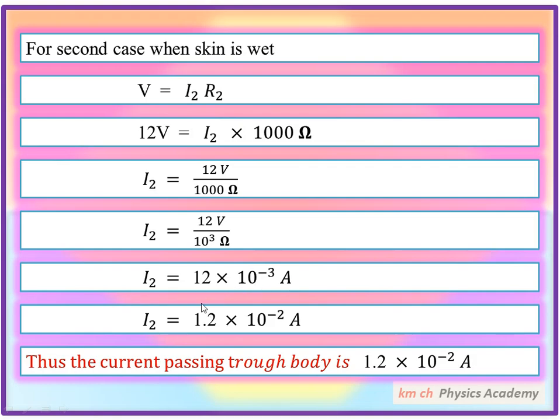12 into 10 power minus 3 ampere. If we place the decimal point here, the power becomes one less, meaning 1.2 into 10 power minus 2 ampere. Thus the current passing through body is 1.2 into 10 power minus 2 ampere.